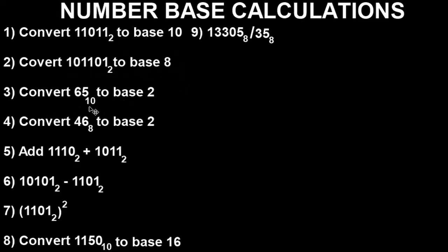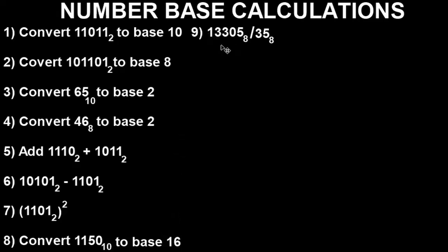Convert this number in base 10 to base two; convert this number in base eight to base two; add these two binary numbers; subtract this binary number from this one; find the product of this binary number; convert this number in base 10 to base 16, that is hexadecimal; and divide this number by this number in base eight. Very easy with the calculator, so let's get straight into it.